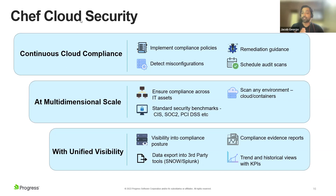Continuous cloud compliance means continuously auditing your cloud environments and understanding where misconfigurations are. You can schedule scans over and over again to make sure your cloud infrastructure is compliant. You also have compliance standard policies you can refer to, like CIS benchmarks, and you'll be able to detect misconfigurations and be guided as to exactly where they happened.